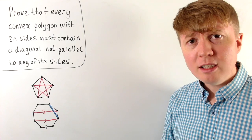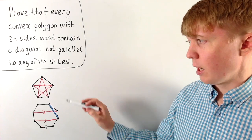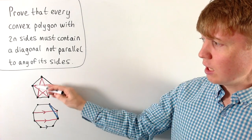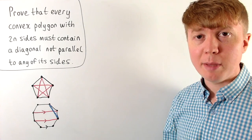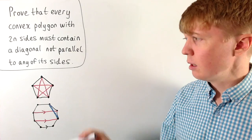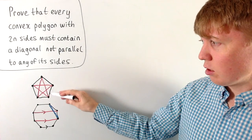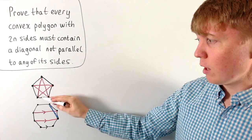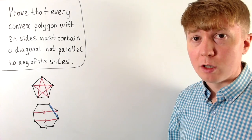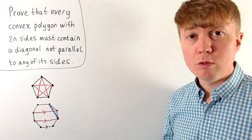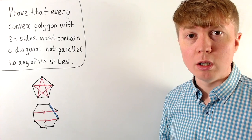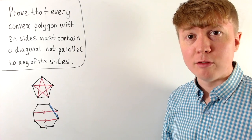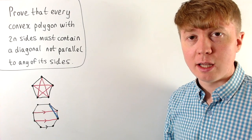If we had an odd number of sides, then actually any regular polygon — like this regular pentagon here — you can see that every diagonal is going to be parallel to one of the sides. So this result doesn't work if you have an odd number of sides.